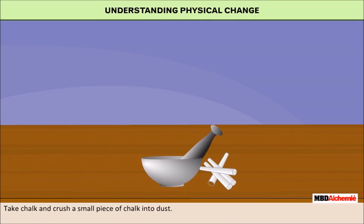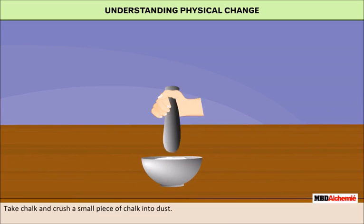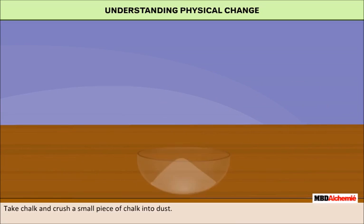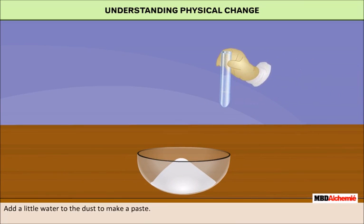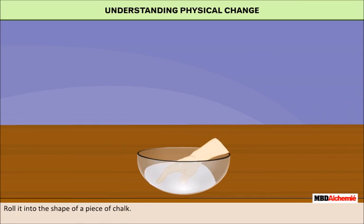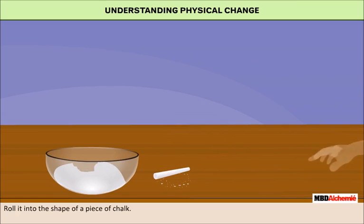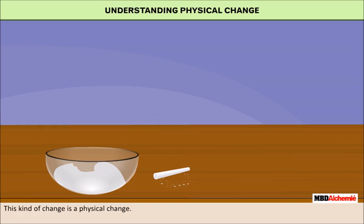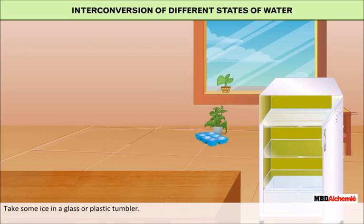Take chalk and crush a small piece of chalk into dust. Add a little water to the dust to make a paste. Roll it into the shape of a piece of chalk and let it dry. Did you recover chalk from the dust? Yes, you will obtain the chalk. This kind of change is a physical change.